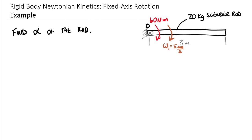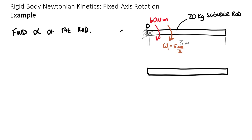There are a couple of ways we can approach this problem. Both start with a free body diagram and a kinetic diagram. Also note that this is the side view — so we're in a vertical plane. With that, we know we're going to have a weight force: the 20 kilogram mass times the gravitational constant of 9.81 meters per second squared, since we're in SI units.